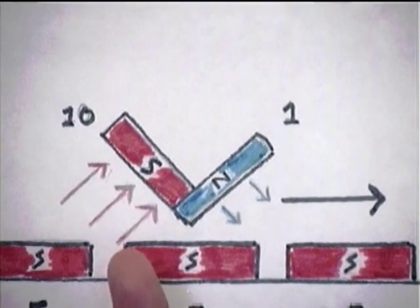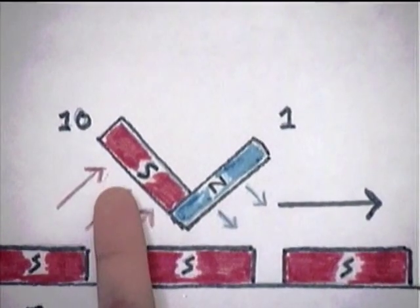The solution to the problem is to make the slider magnet V-shaped. This consists of a south pole and a north pole. At the front of the V, it's the north pole magnet.